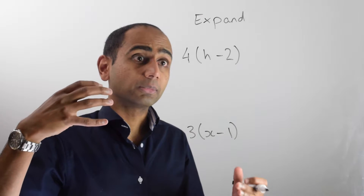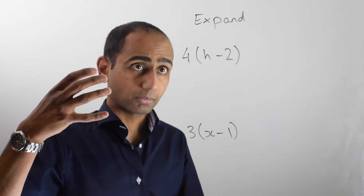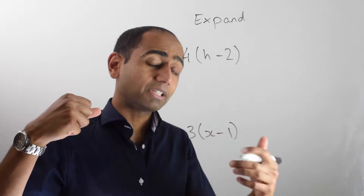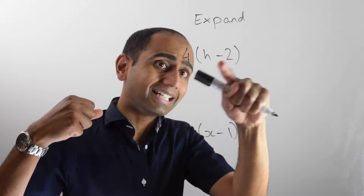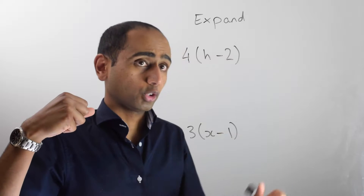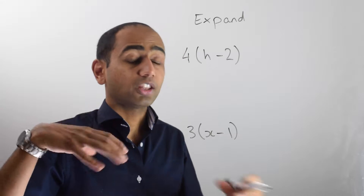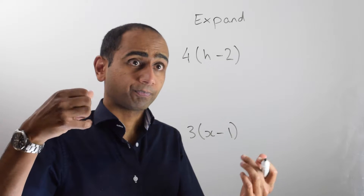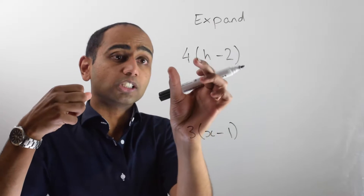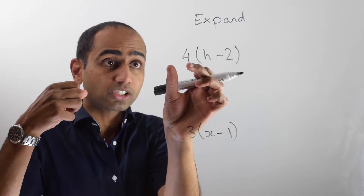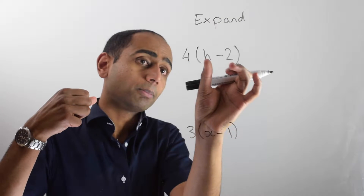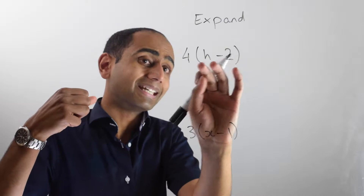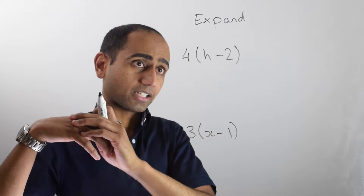These examples are very similar to the previous examples, except now we've got negative numbers involved. The method is going to be the same, however. I want to multiply what's outside the bracket by every term inside the bracket.